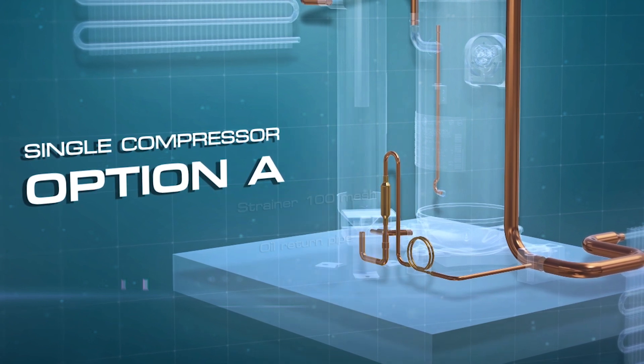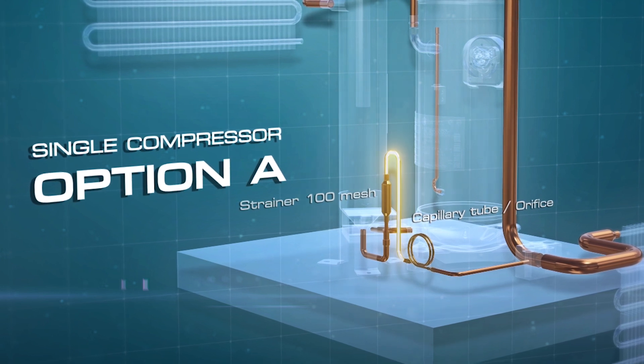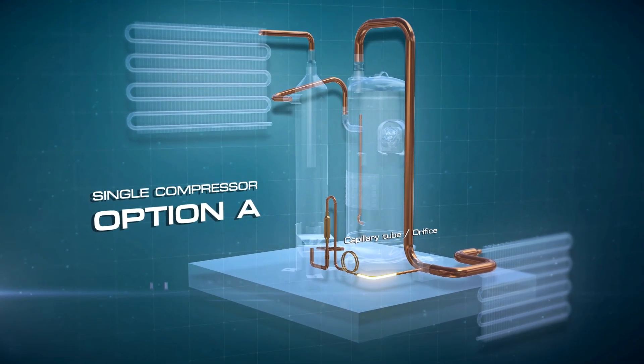Then connect the oil separator's oil return pipe to the compressor's suction pipe via a filter and a flow controller.